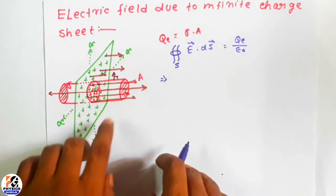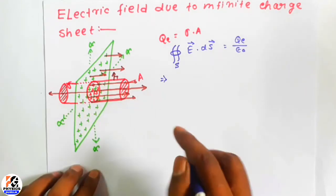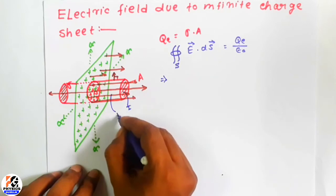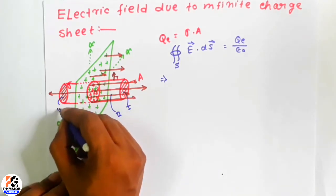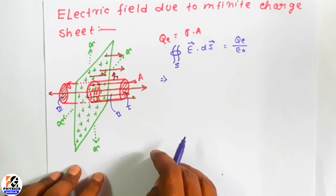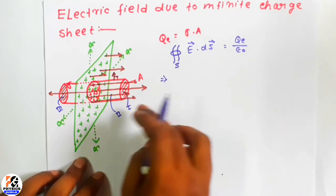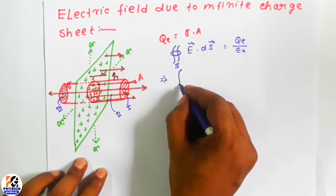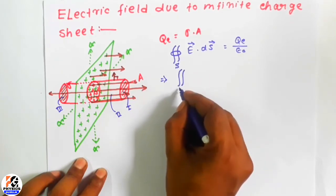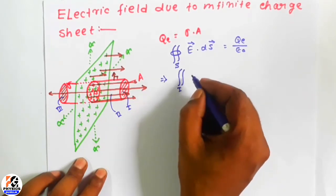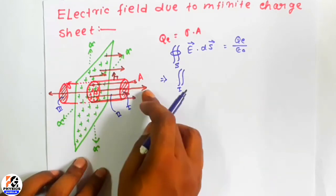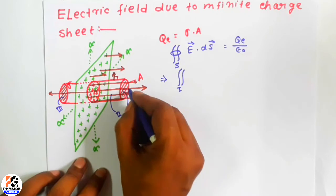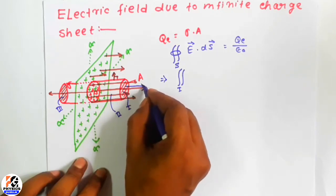Now look here: we have three surfaces — this is surface one, the curved surface is surface two, and this plane surface is surface three. So we can break this integration into three parts. The first part is for surface one.